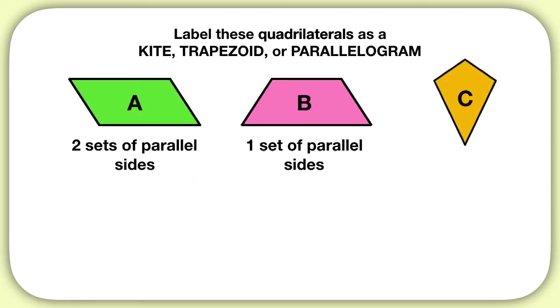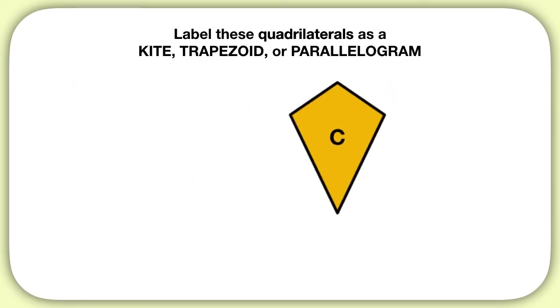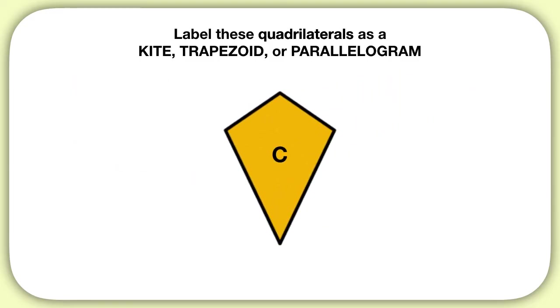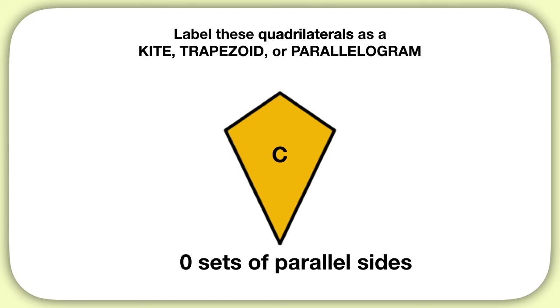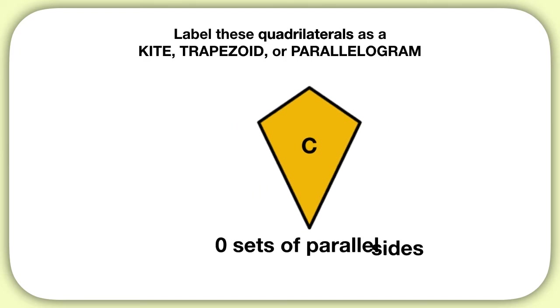What about shape C? Shape C has zero sets of parallel sides. None of the sides are parallel to each other.